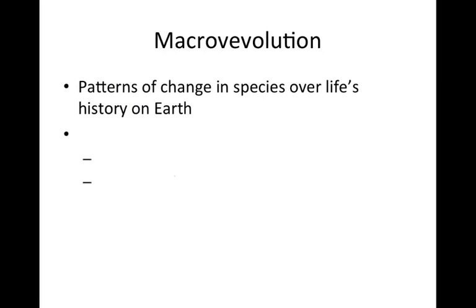When we talk about macroevolution — the patterns of change in species over life's history on the planet — we have to keep in mind factors that change the rate of speciation. This helps explain what originally seemed like weird trends in the fossil record, with very plausible explanations, things like punctuated equilibrium.